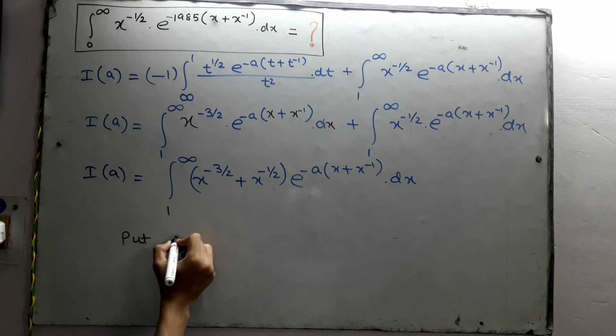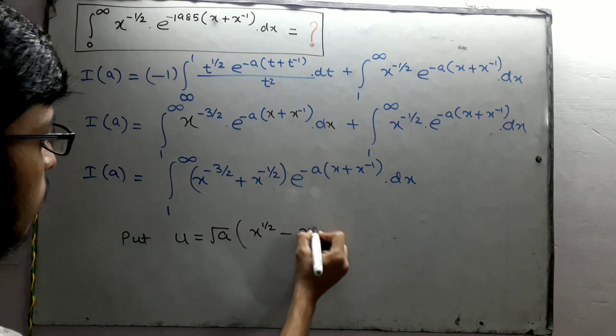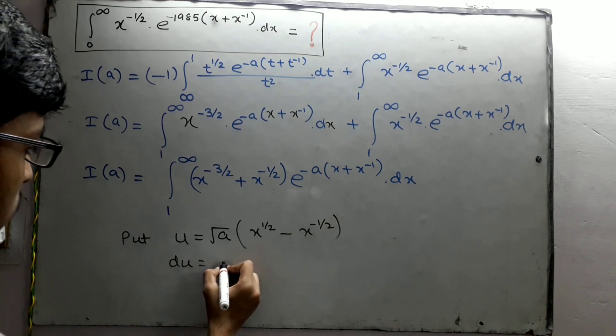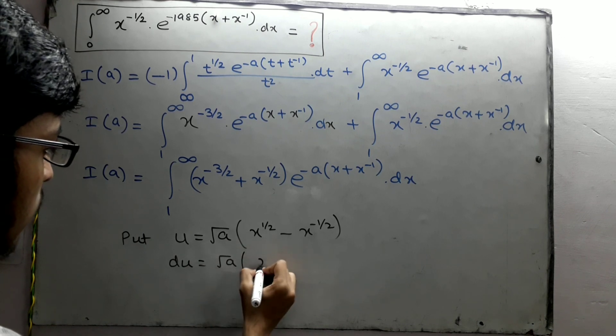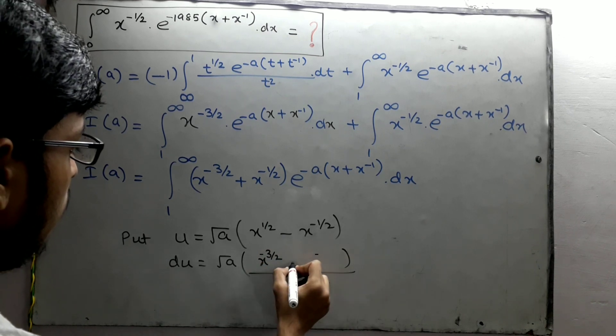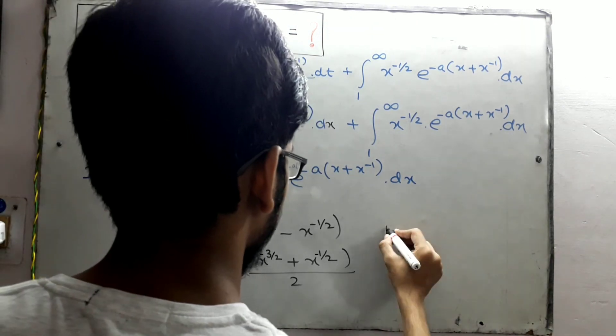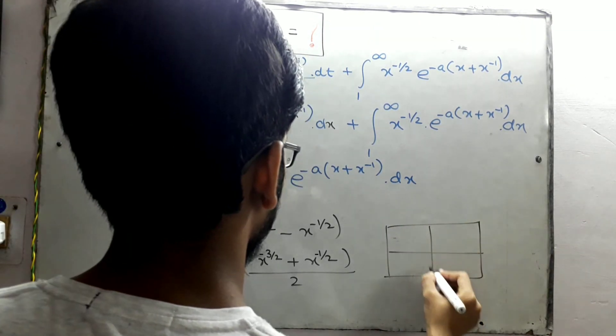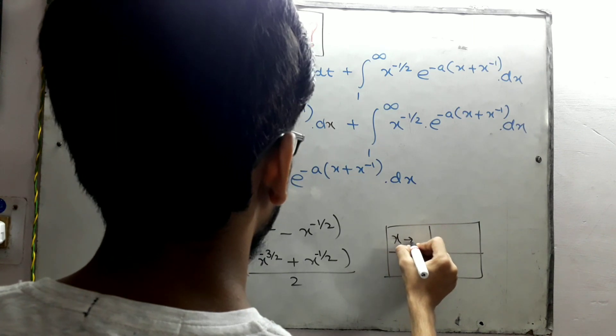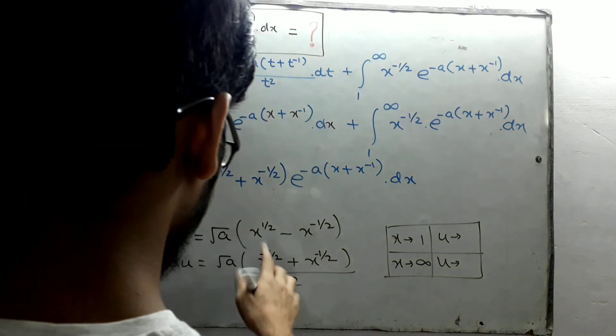Now to solve this integral, we will make a substitution. Put u equals square root of a bracket x to the power half minus x to the power minus half. Then du will be equals to square root of a upon 2 bracket x to the power minus half plus x to the power minus 3 upon 2 dx.